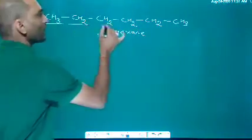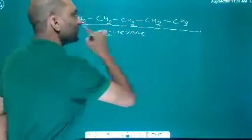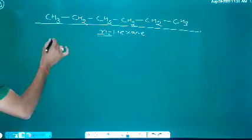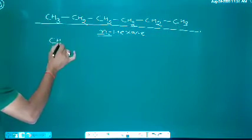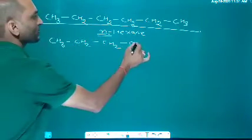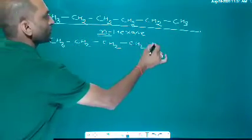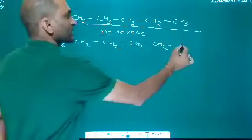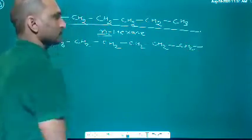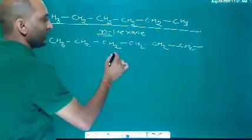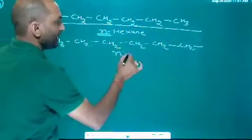When we say all carbons are present in a straight chain, then the N prefix is used. Another example: CH3, CH2, CH2, CH2, CH2 and a CH2 with a free valence C — it is N-hexane.